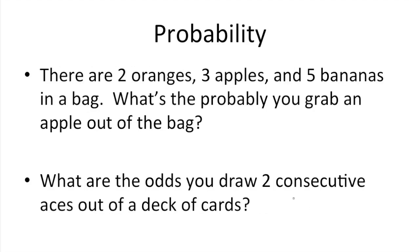All right, so some probability questions. There are 2 oranges, 3 apples, and 5 bananas in a bag. What's the probability you grab an apple out of the bag? So we know we have a total of 2, 3, which is 5, plus 5, 10 pieces of fruit in a bag. You want to know the probability of grabbing an apple. There are 3 apples. So the chances are 3 over 10.